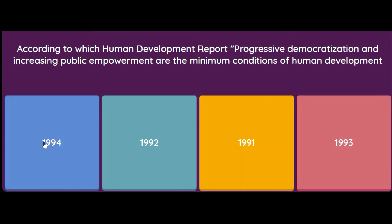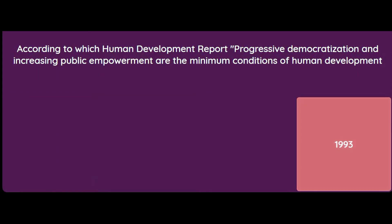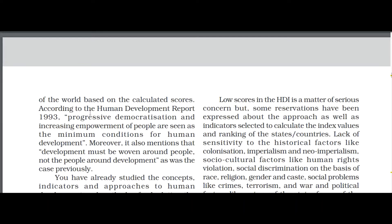According to which Human Development Report were progressive democratization and increasing public empowerment considered the minimum conditions of human development? Options are 1994, 1992, 1991, or 1993. The answer is the Human Development Report of 1993. According to the 1993 report, progressive democratization and increasing empowerment of people are seen as the minimum conditions for human development. It also mentions that development must be woven around the people, not the people around development. So if you are asked which report stated that development must be woven around people, the answer is the Human Development Report of 1993.